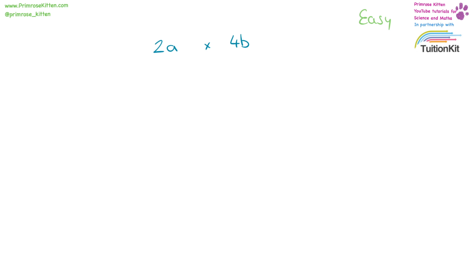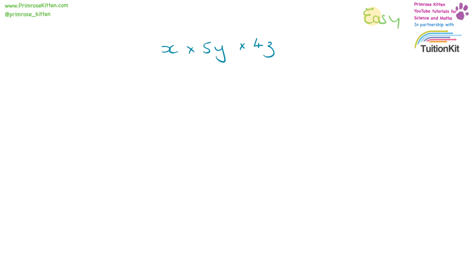Getting slightly more complicated now — we have a couple of things times together. Here we have numbers which are the same, and A's and B's. Things that are the same can multiply by each other. So each of the numbers can be multiplied by each other: five times four is 20xyz.